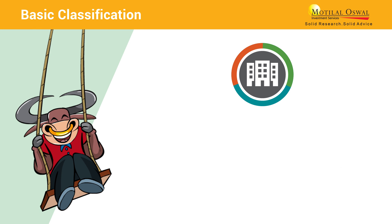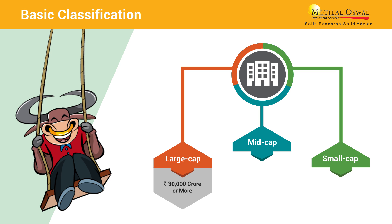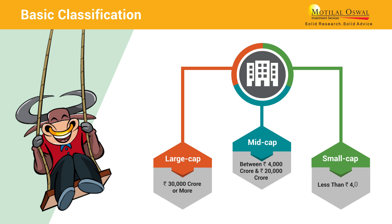The three types are large cap, mid cap, and small cap. Large cap companies are those having a market cap of rupees 30,000 crores and above. Mid cap companies have a market cap of anywhere between rupees 4,000 crore and rupees 20,000 crore. Small cap includes companies with a market cap of less than rupees 4,000 crore.